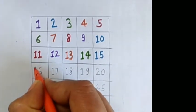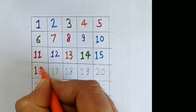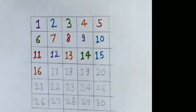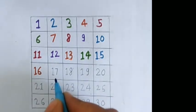1, 6, 16, orange color. What comes after 16? Yes, 17. 1, 7, 17.